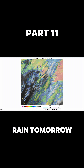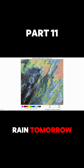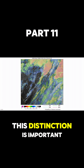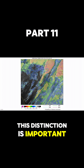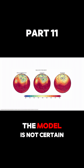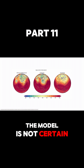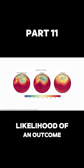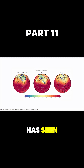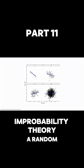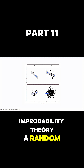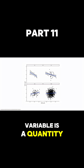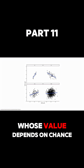This distinction is important: the model is not certain, it is estimating the likelihood of an outcome based on the data it has seen. In probability theory, a random variable is a quantity whose value depends on chance.